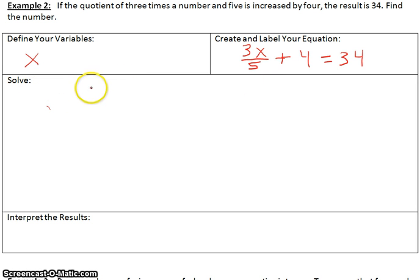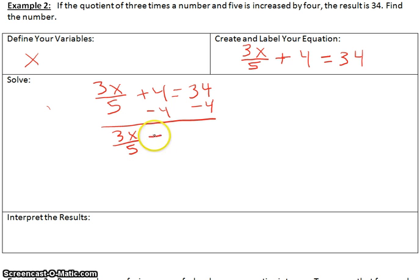Now we want to solve. We write the equation again. We will solve this equation. First, we will subtract 4 on both sides of the equal sign. So we have 3X divided by 5 equals 30. Because 4 minus 4 is 0. So 3X over 5 equals 30. And 34 minus 4 is 30.